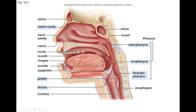What the epiglottis does is cover the airway when we swallow and prevent food from going into the trachea and causing choking. Instead, the food continues on behind the airways, down the esophagus, and into the stomach.